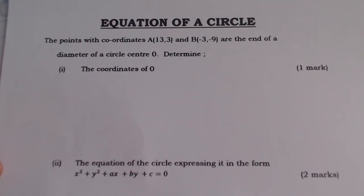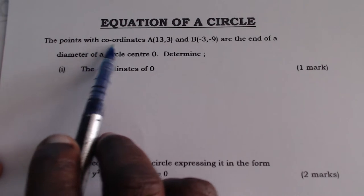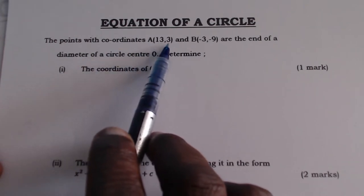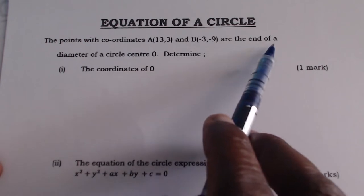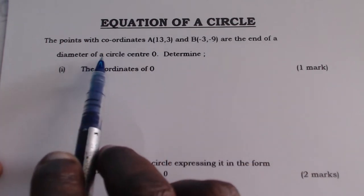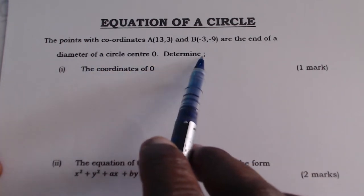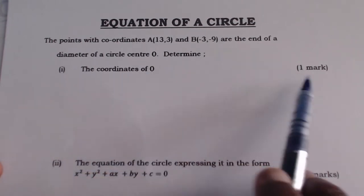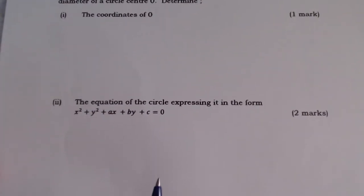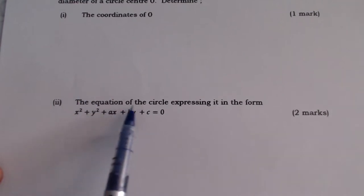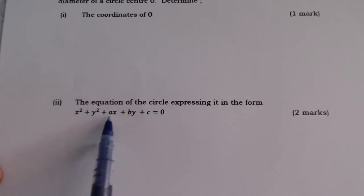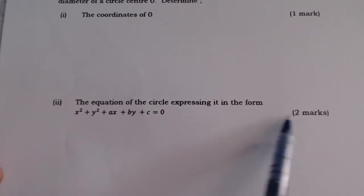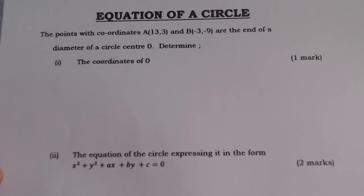Welcome — equation of a circle. The point with coordinates A(13, 3) and B(-3, -9) are at the ends of a diameter of a circle with center O. Determine: one, the coordinates of O (one mark); and two, the equation of the circle, expressing it in the form x² + y² + ax + by + c = 0.